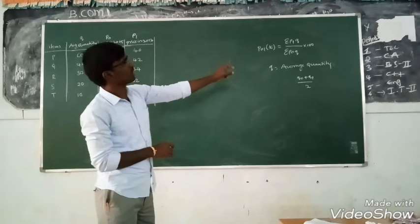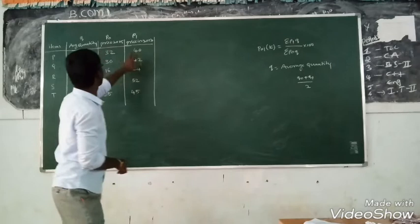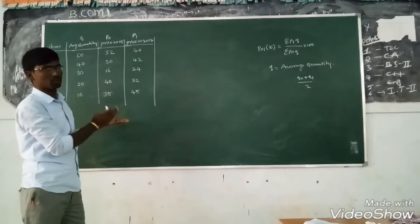We want to calculate summation of P1 into Q and summation of P0 into Q. Already we have P0, Q. Already we have P1, Q. Just multiply these values with the Q.